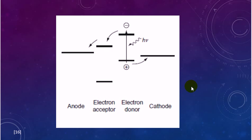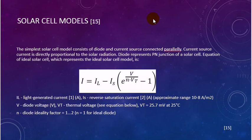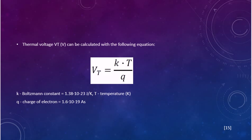Solar cell models. The simple solar cell model consists of a diode and current source connected in parallel. Current source current is directly proportional to the solar radiation. The diode represents the PN junction of the solar cell. The equation of ideal solar cells which represents the ideal solar cell model is shown here.